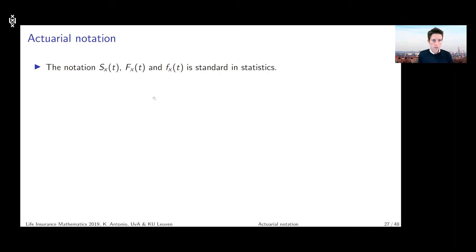So the notation S_x(t), F_x(t) and then small f_x(t) that's standard in statistics for the survival function, the cumulative distribution function and the probability density function.